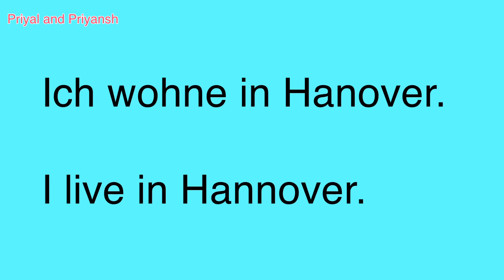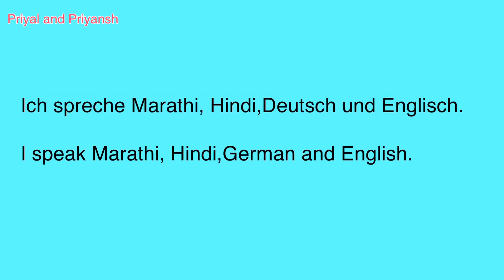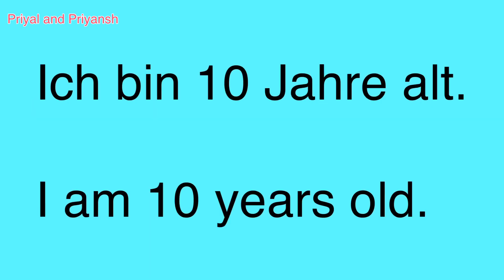You can also replace Hannover with your own city. Moving on to languages: 'Ich spreche Marathi, Hindi, Deutsch und Englisch,' which means 'I speak Marathi, Hindi, German, and English.' The next one is 'Ich bin zehn Jahre alt,' which means 'I am ten years old.'